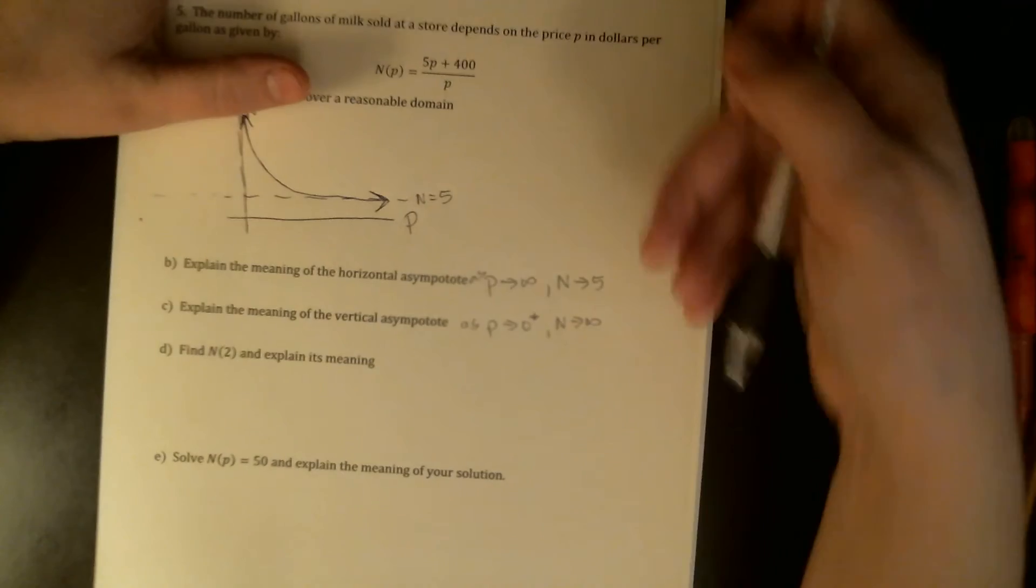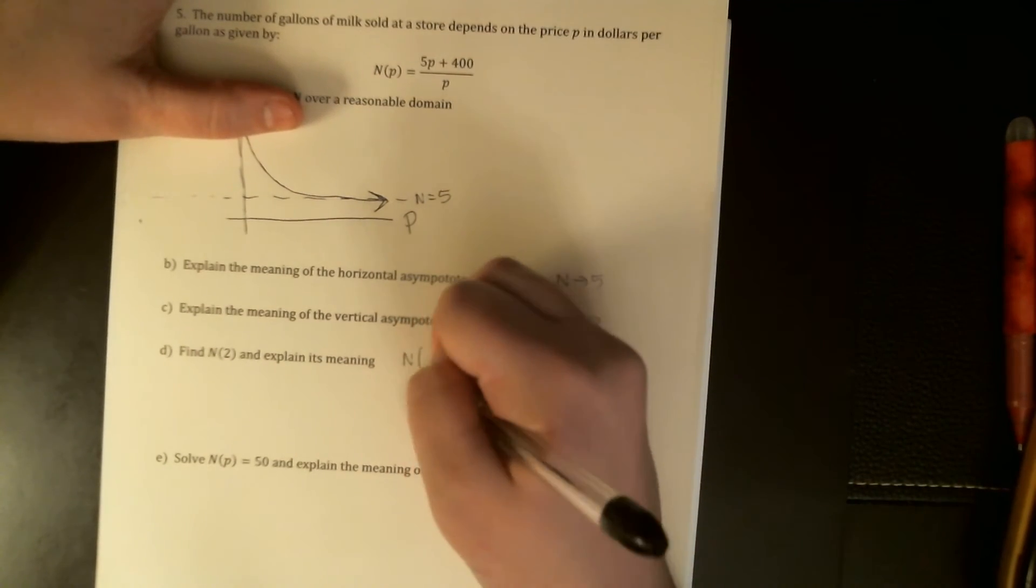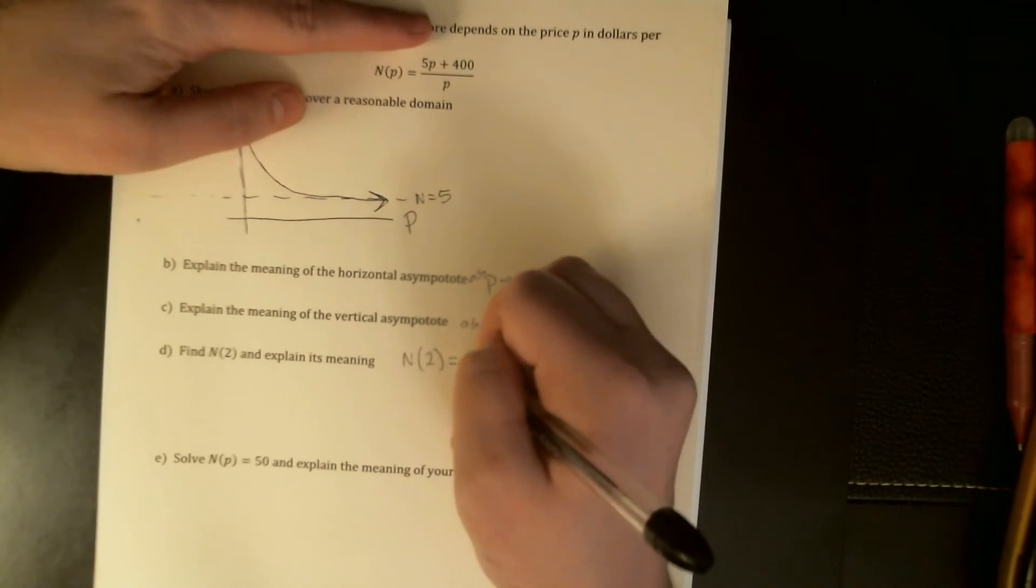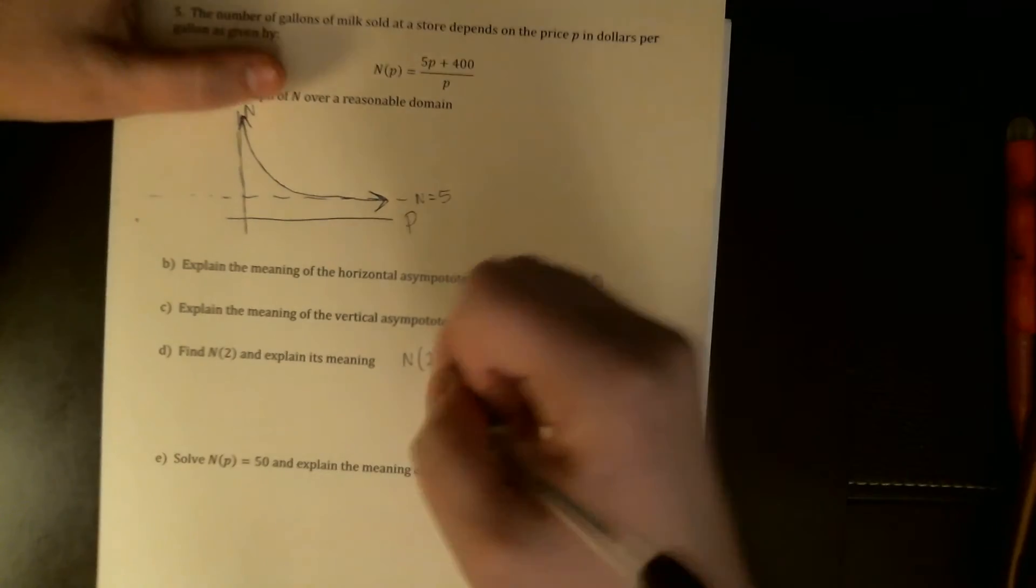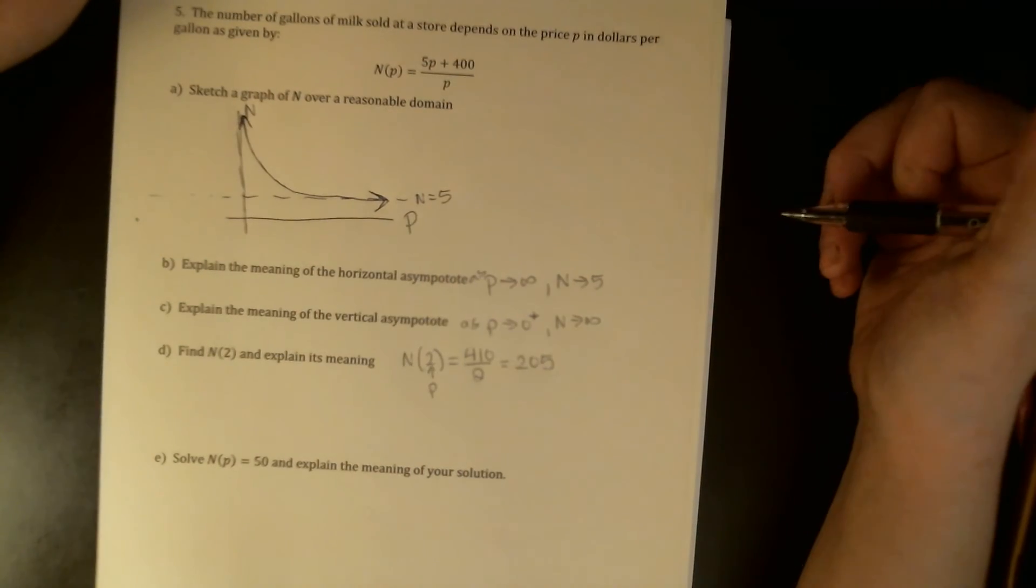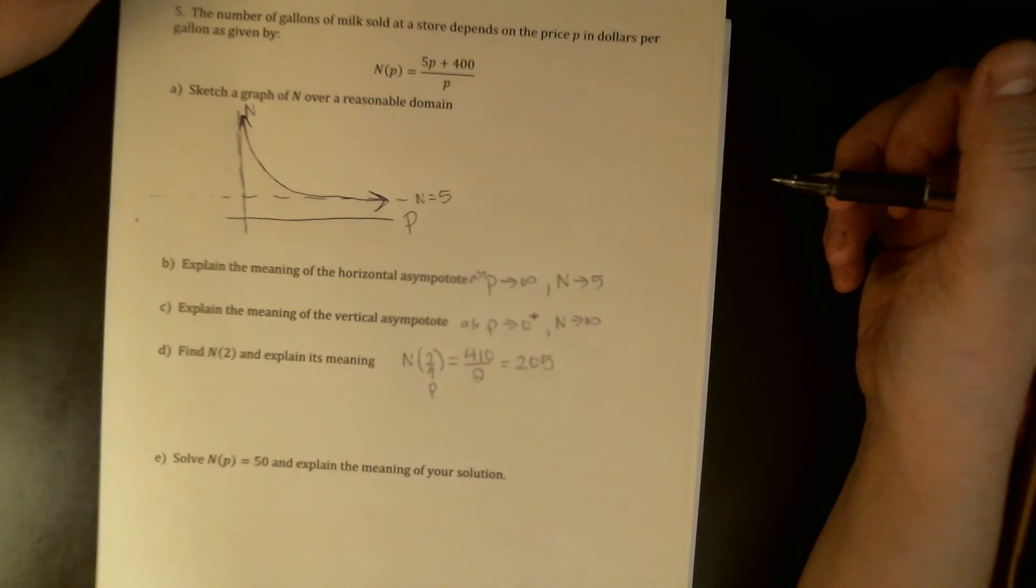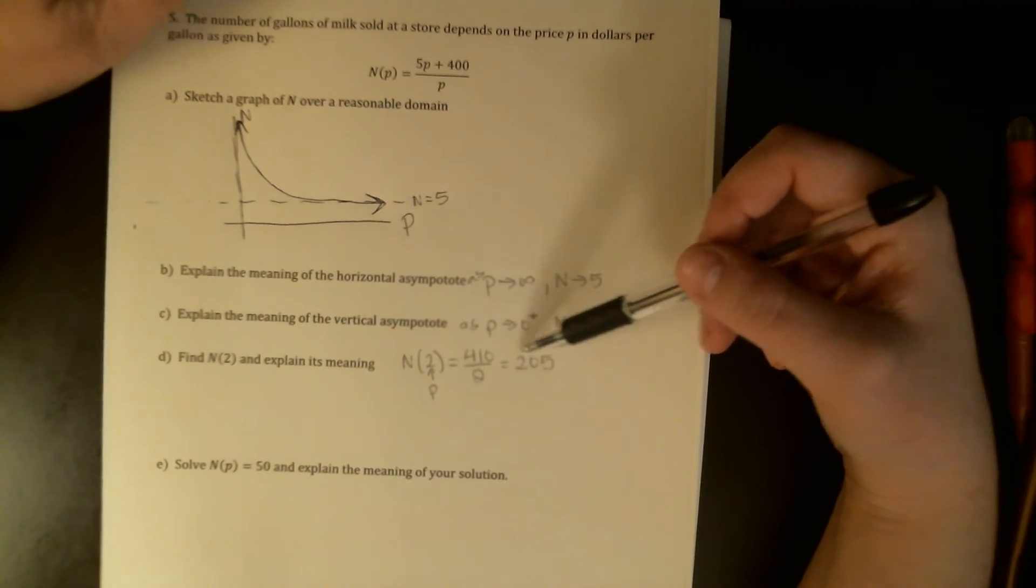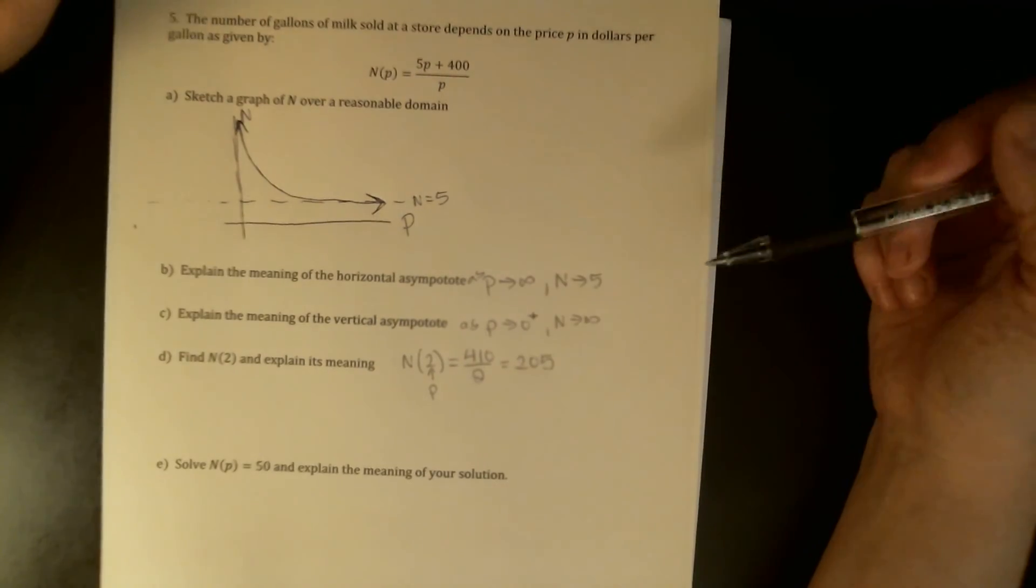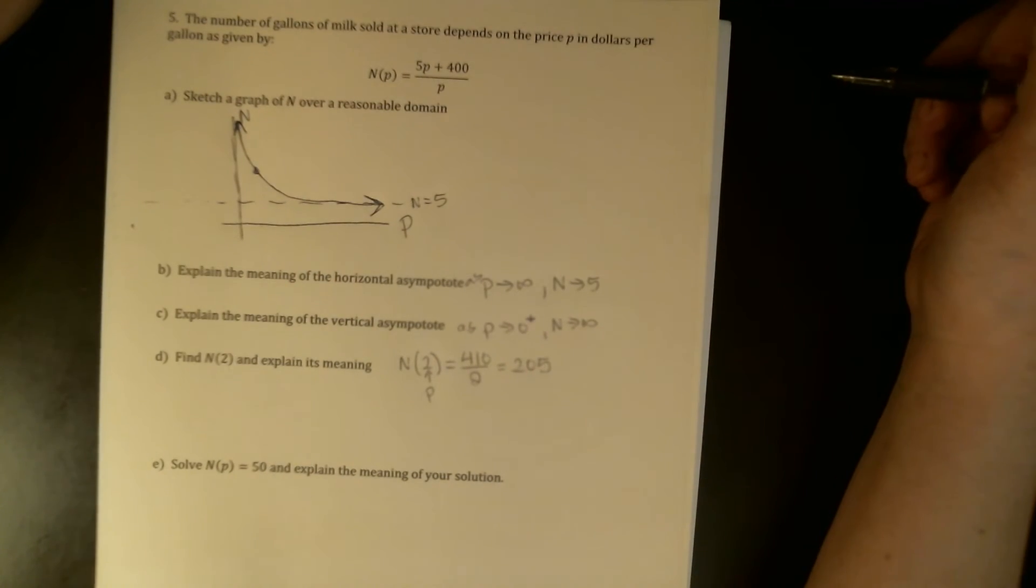Find n of 2 and explain its meaning. So n of 2 is 410 over 2, which is 205. So this was my p. If they charge $2 per gallon, this sounds like a wonderful deal, but maybe that's because I've been buying organic milk, there will be 205 gallons demanded. There's nothing too weird about that point. It's just saying when the price is $2, the demand will be 205 gallons of milk.